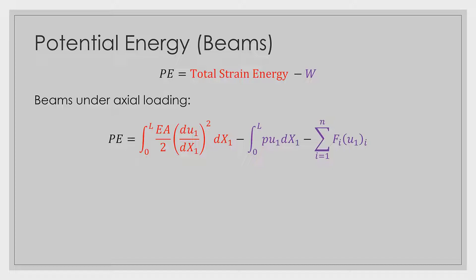The first beam scenario we covered was a beam under axial loading. The potential energy simplifies into the integral over the length of the beam of EA/2 multiplied by the derivative of the displacement function squared — that's the internal strain energy. Then we subtract the work done: integrating distributed load P over the length multiplied by the displacement, plus concentrated loads F multiplied by their corresponding displacement.